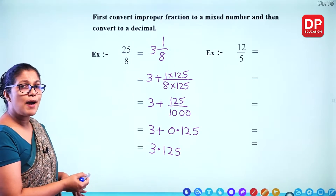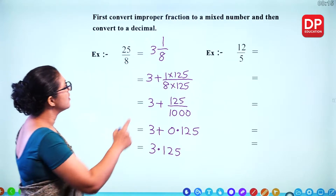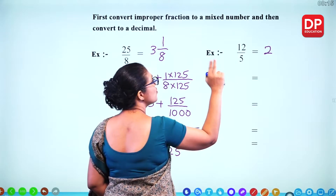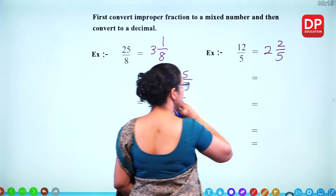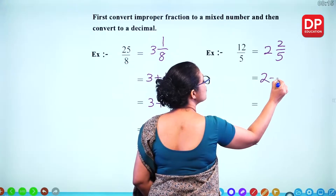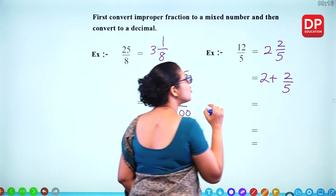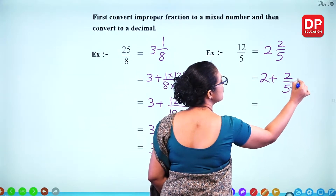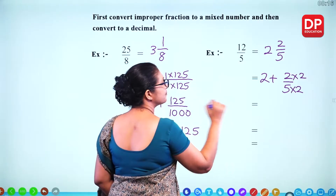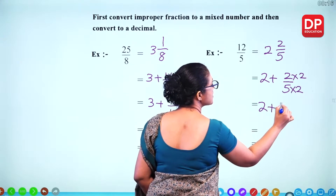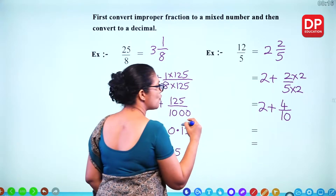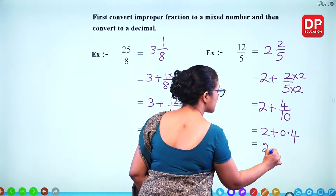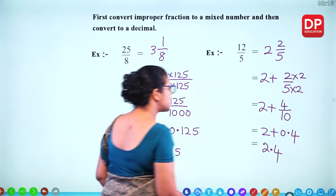For 12 over 5: first convert to a mixed number using long division. 5 times 2 is 10, with 2 remaining. So it becomes 2 plus 2 over 5. Now convert: 5 times 2 gives 10, so the numerator also multiplied by 2 gives 4 over 10. What is 4 over 10? That is 0.4. So the answer is 2.4.